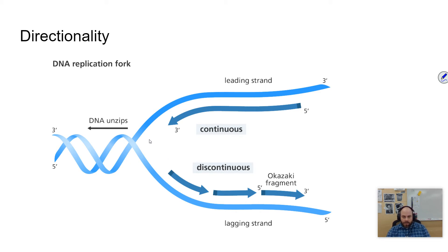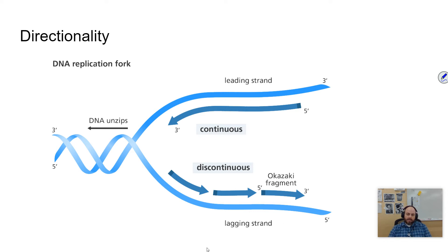The paper towel roll, so to speak, is going to have to open a little bit, write a section, open a little bit more, write another section. That's why this strand happens in a discontinuous fashion — as it opens up, a little bit more is going to be copied. It copies in these fragments, which are called Okazaki fragments, named after someone named Okazaki. This is called the lagging strand.